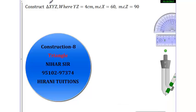Hello friends, in this video we will construct triangle XYZ where YZ is equal to 4, angle X is equal to 60, and angle Z is equal to 90. Now first of all, we have been told to draw YZ equal to 4 centimeters.